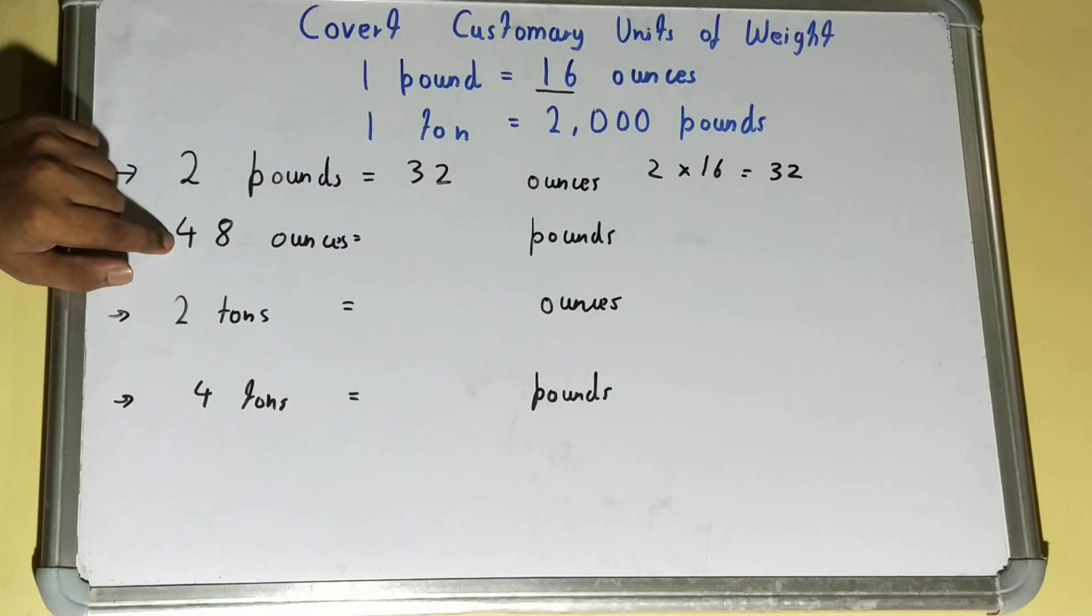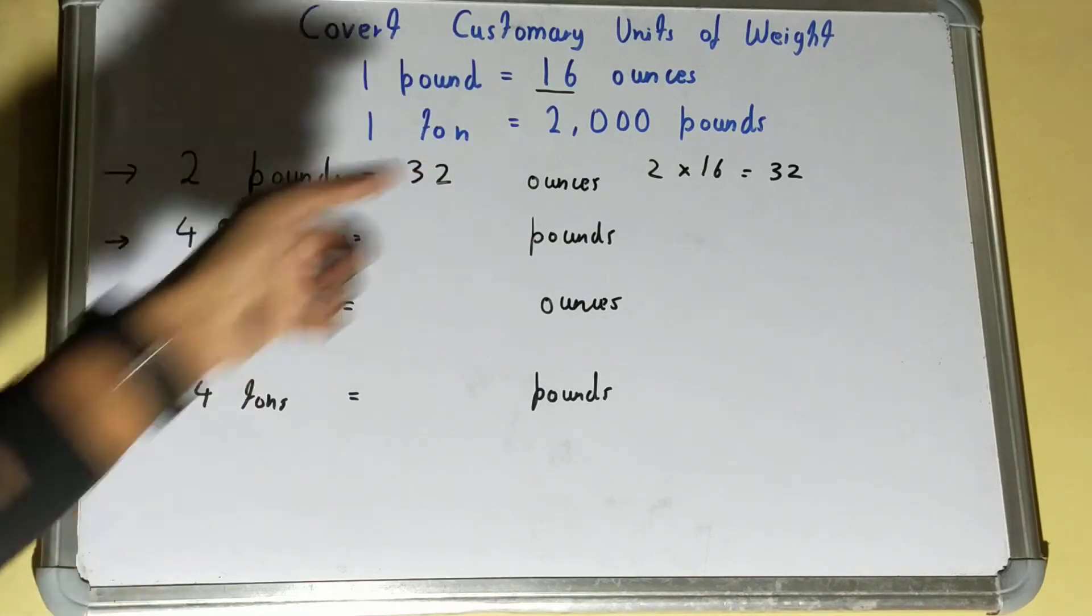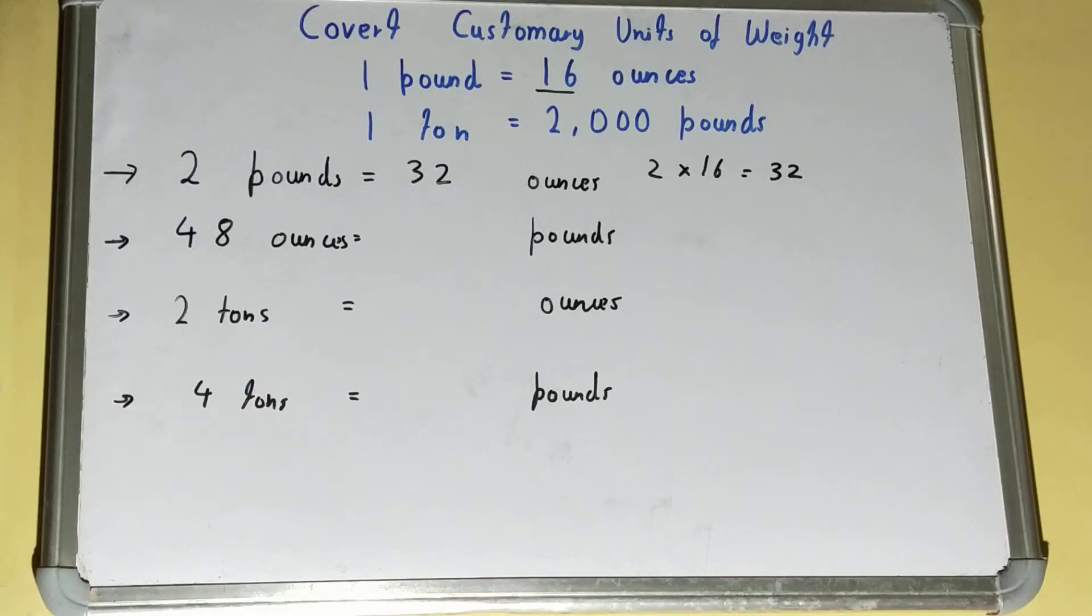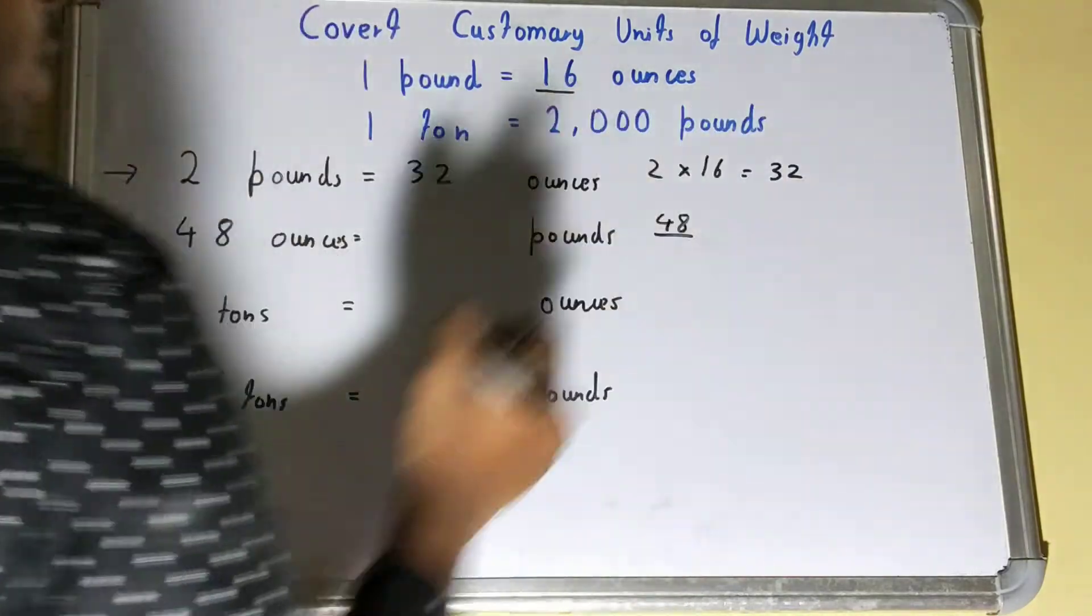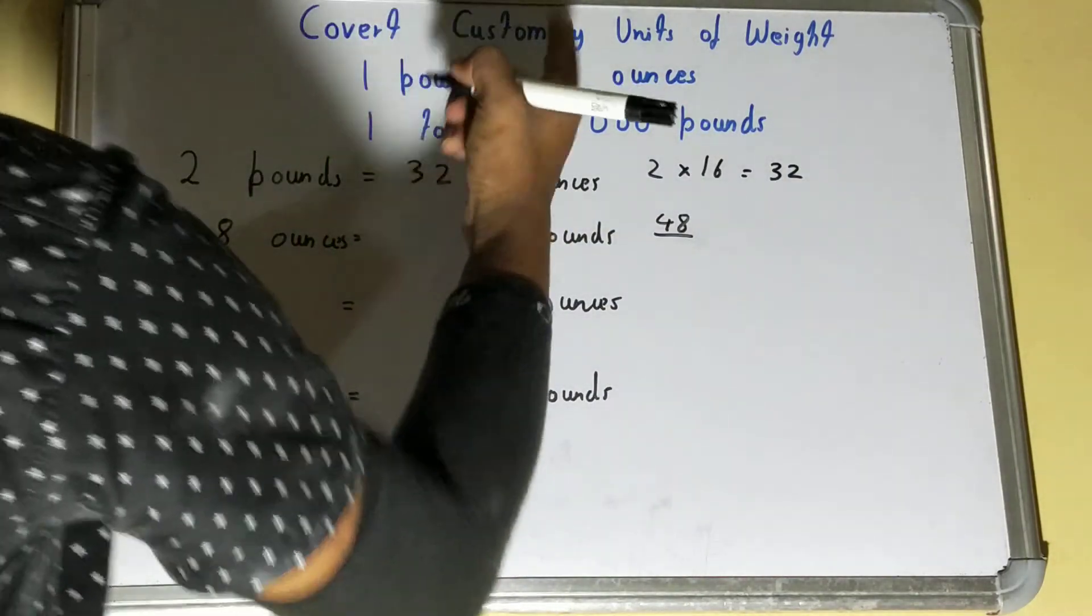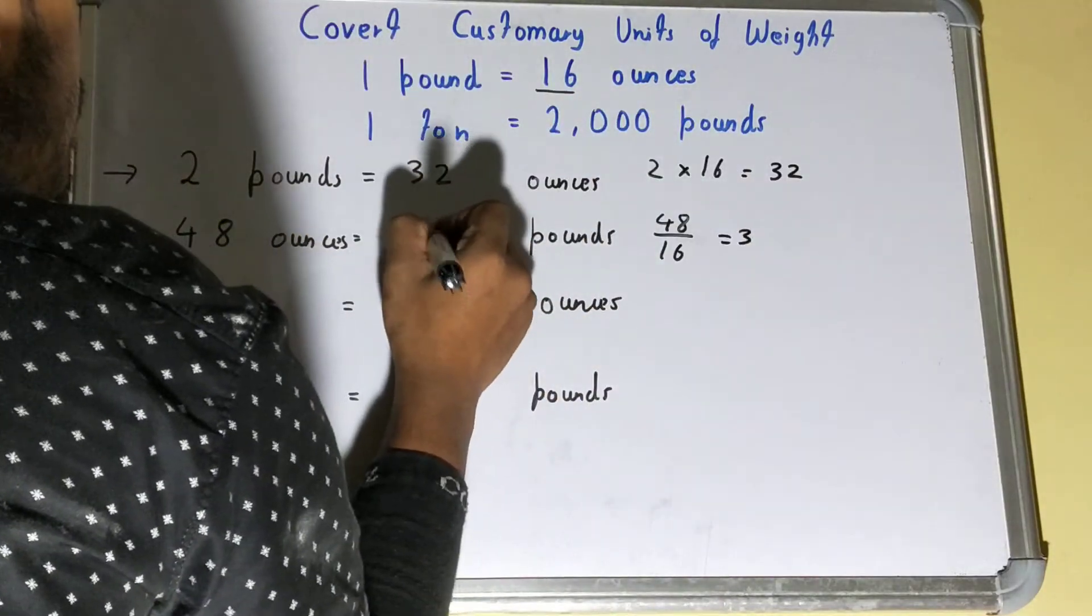Now we have to convert 48 ounces to pounds. Ounces are a smaller unit than pounds, right? So when we convert from a smaller unit to a bigger unit, instead of multiplying what we do is we divide. So we will divide by 16, and you'll get it as 3 pounds.